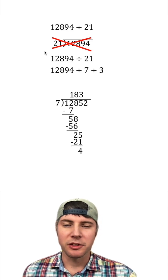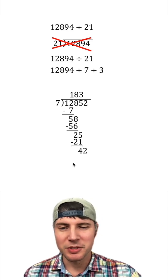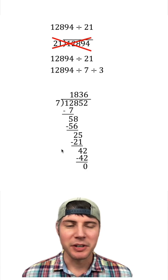7 times 3 is 21. We can subtract those and get 4. Bring down the 2. How many times does 7 go into 42? Exactly 6 times. And we can see that brings us to 0.